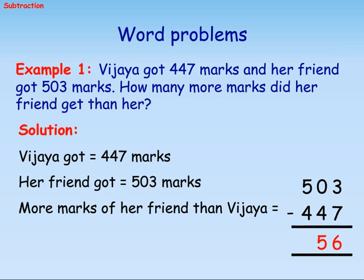Word problems. Example 1: Vijayar got 447 marks and her friend got 503 marks. How many more marks did her friend get than her? Solution: Vijayar got 447 marks. Her friend got 503 marks. More marks of her friend than Vijayar equals 503 minus 447 equals 56.